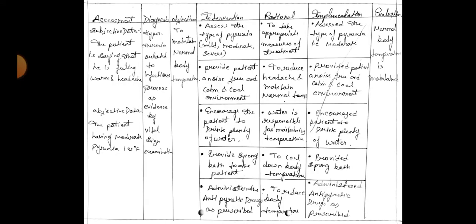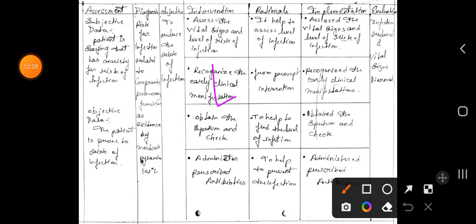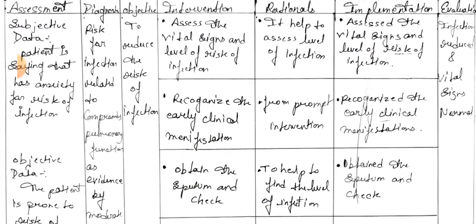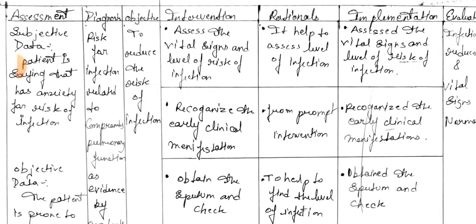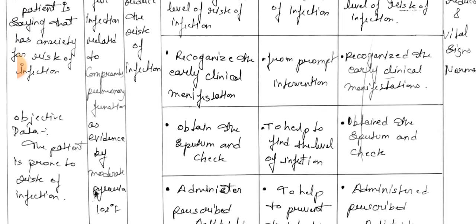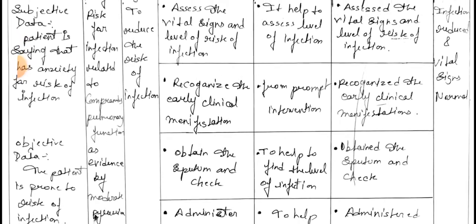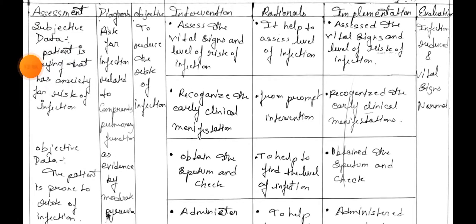Care plan number four — same phases: assessment, diagnosis, objective, intervention, rational, implementation, evaluation. Subjective data: patient is saying he has anxiety regarding risk for infection. Objective data: the patient is prone to risk for infection. Diagnosis: risk for infection related to compromised pulmonary function as evidenced by moderate pyrexia.